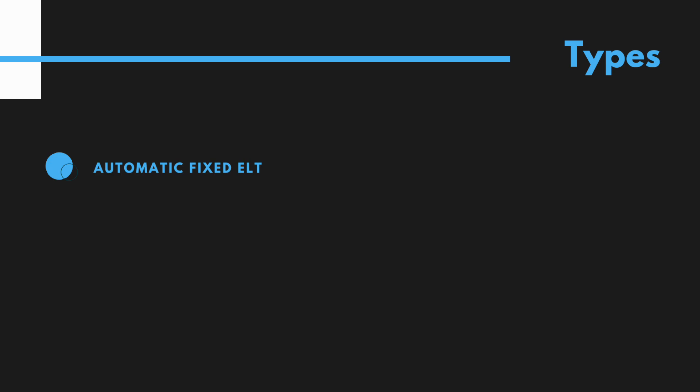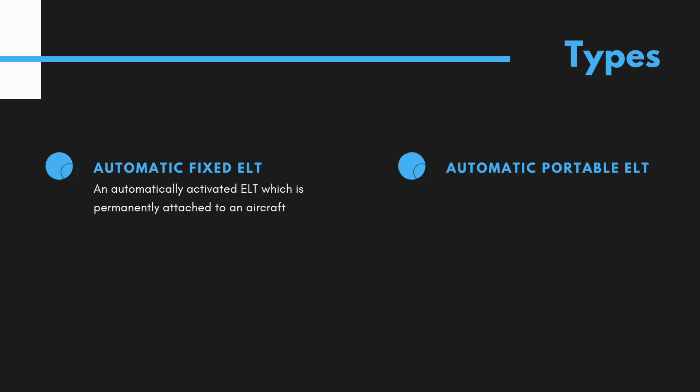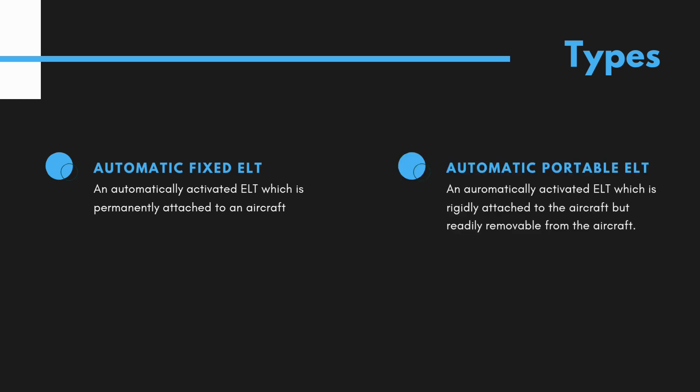An ELT may take any of the following forms. Automatic Fixed ELT is an automatically activated ELT that is permanently and rigidly attached to the aircraft but is also readily removable from the aircraft.